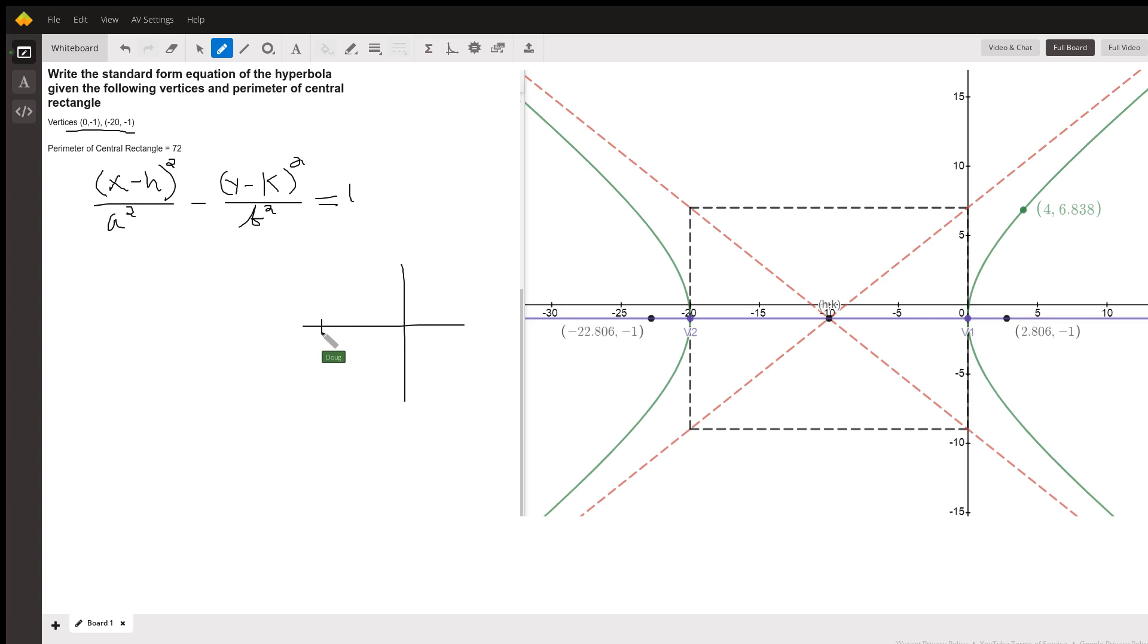So if you have a hyperbola with vertices at negative 20, negative 1 right here and 0, negative 1, the center of that hyperbola is going to be the midpoint of this segment right here.